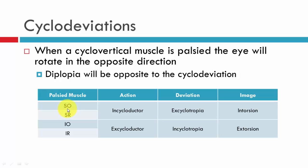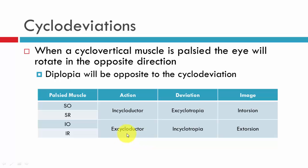Recall that the superior muscles — the superior oblique and the superior rectus — are encycloductors, which means that if this muscle is palsied, the eye will rotate in the opposite direction and cause an excyclotropia. An excyclotropia will cause the image to be intorted, or the patient to experience intortation. The inferior oblique and the inferior rectus are excycloductors; they cause an excyclotropia, which means the diplopic image will be extorted.